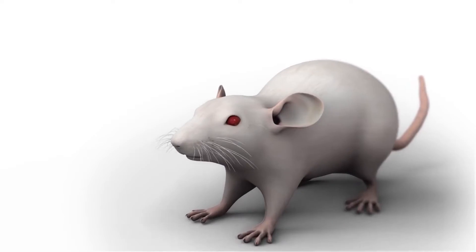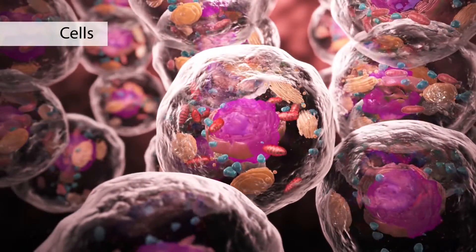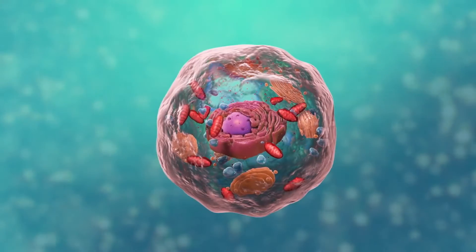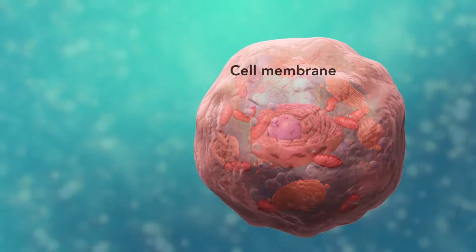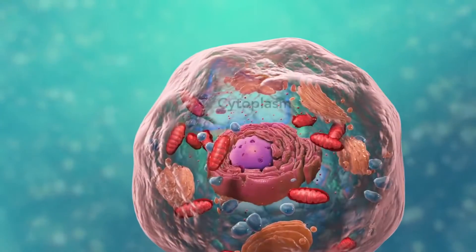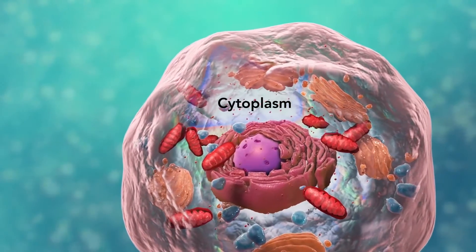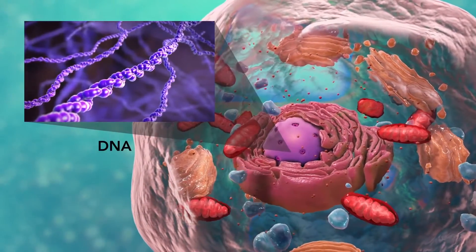Cells are the smallest living units of an organism. All cells have three things in common no matter what type of cell they are. All cells have a cell membrane which separates the inside of the cell from its environment, cytoplasm which is a jelly-like fluid, and DNA which is the cell's genetic material.